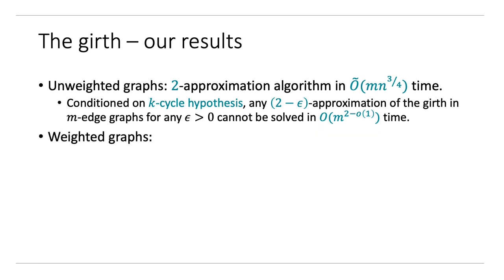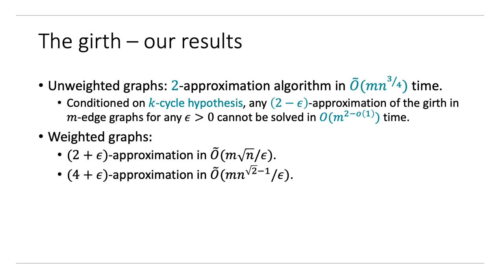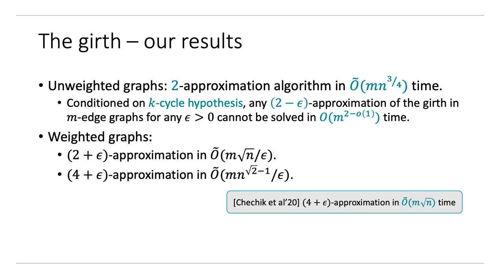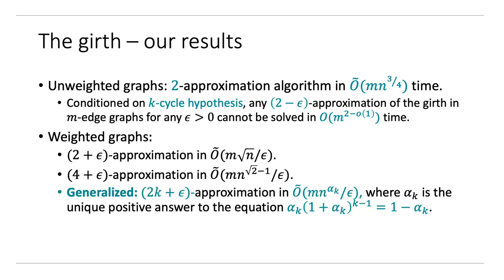For weighted graphs, we prove a 2 plus epsilon approximation in M times root N time. We bring this one step further and give a 4 plus epsilon approximation in MN to the root 2 minus 1 time. The best running time for this approximation factor was M root N due to Cechik et al. Finally, we give a generalized result: a 2K plus epsilon approximation algorithm running in MN to the alpha_K time, where alpha_K is the unique positive answer to a given equation. As K grows, alpha_K grows as theta of log K over K.